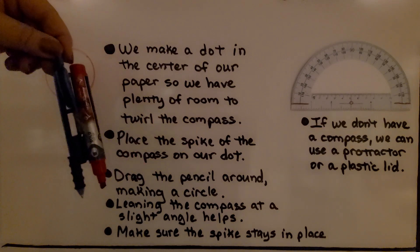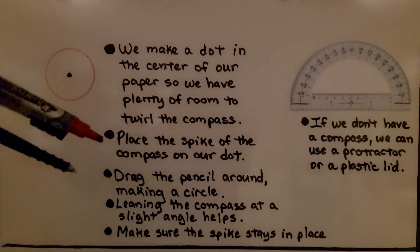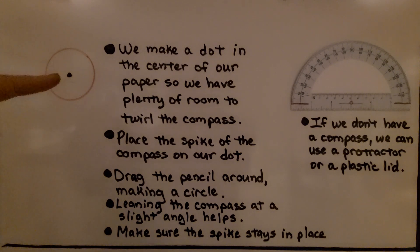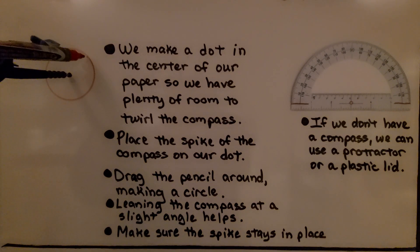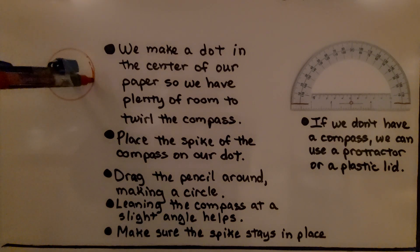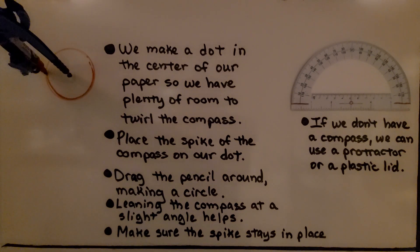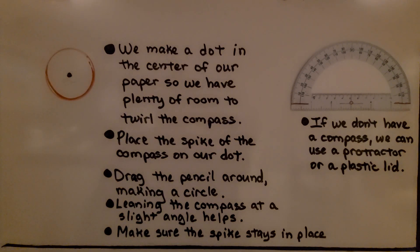So here's my compass. I actually taped a dry erase marker to it so I could show you. We make a dot in the center of our paper so we have plenty of room to twirl the compass. We place the spike of the compass on our dot and we drag the pencil, or in my case a marker, around making a circle.